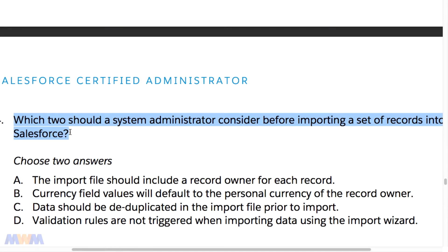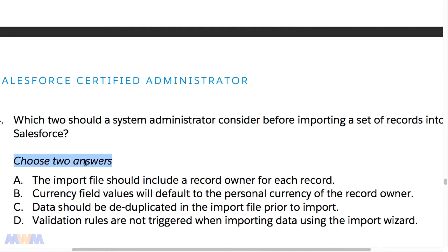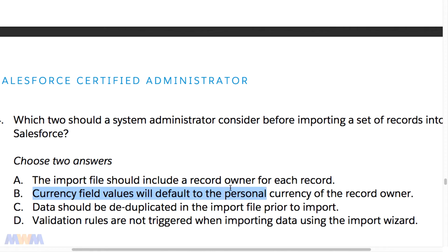Now it's time to look at sample question number four from the Salesforce Certified Administrator exam guide. The question reads: which two should a system administrator consider before importing a set of records in Salesforce? Choose two answers. The options are: A — the import file should include a record owner for each record; B — currency field values will default to the personal currency of the record owner; C — data should be deduplicated in the import file prior to import; and D — validation rules are